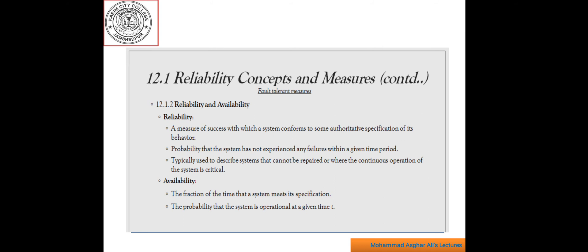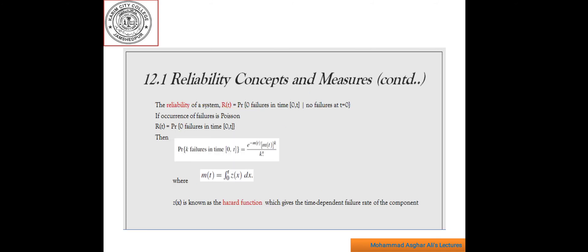Now, reliability and availability. Reliability refers to the probability that the system under consideration does not experience any failures in a given time interval. It is typically used to describe systems that cannot be repaired, or where the operation of the system is so critical that no downtime for repair can be tolerated. Availability refers to the probability that the system is operational according to its specification at a given point in time — the fraction of time that the system meets its specification.